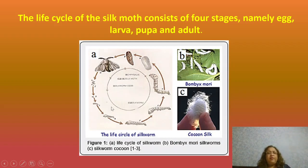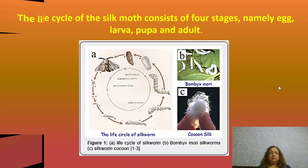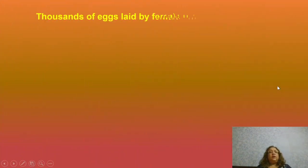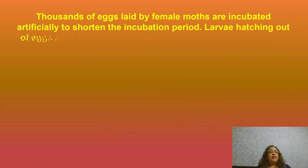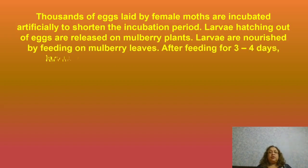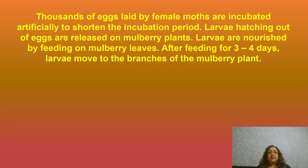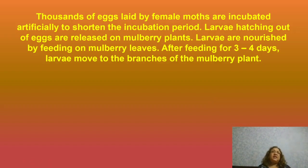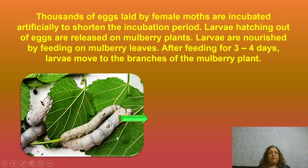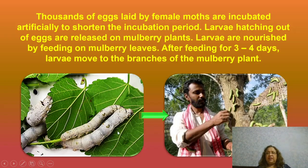Thousands of eggs laid by female moths are incubated artificially to shorten the incubation period. Larvae hatching out of the eggs are released on mulberry plants and nourished by feeding on their leaves. After feeding for three or four days, they move on to the branches of the mulberry plant. The artificial incubation helps the eggs hatch faster.